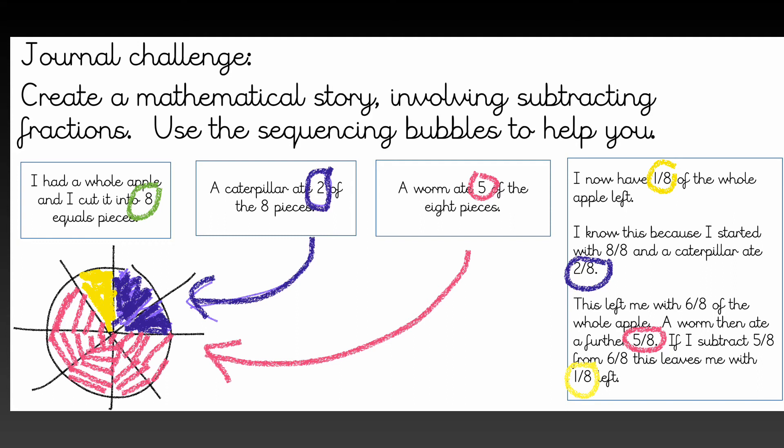In the last box I have explained the sequence. I now have 1 eighth of the whole apple left. I know this because I started with 8 eighths and a caterpillar ate 2 eighths. This left me with 6 eighths of the whole apple. A worm then ate a further 5 eighths. If I subtract 5 eighths from 6 eighths this leaves me with 1 eighth.